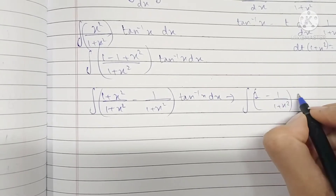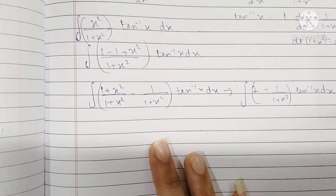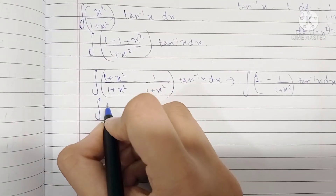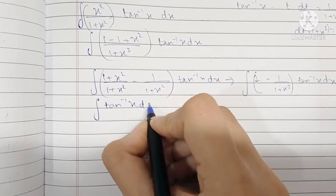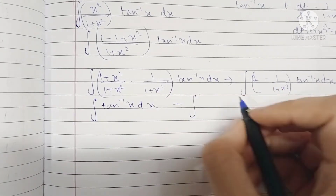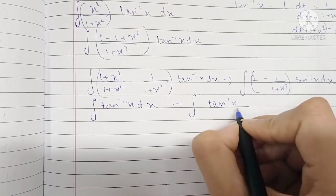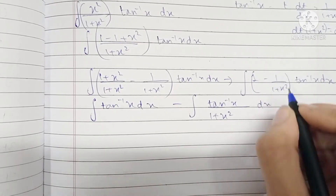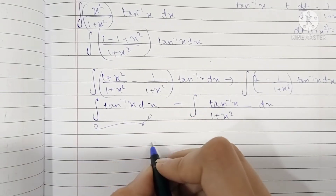Now I'm going to write this as two separate integrals: one becomes ∫ tan⁻¹(x) dx, and the other becomes ∫ tan⁻¹(x)/(1 + x²) dx — just expanding this out.